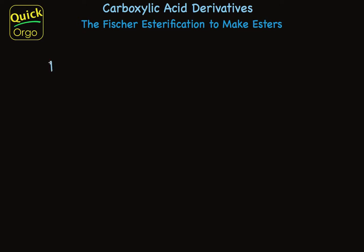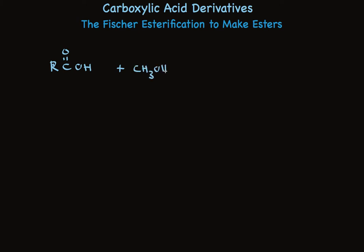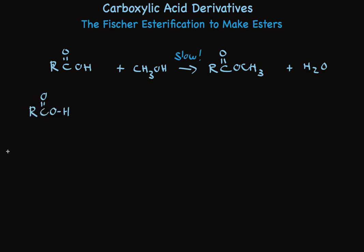The transformation of a carboxylic acid into an ester is very common in organic chemistry and widely used industrially. Treatment of a carboxylic acid with a small alcohol like methanol can make the ester, with water as a byproduct. A major issue is that this reaction is very slow, so we need to use a catalyst to make it faster.